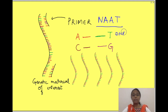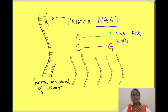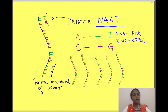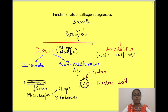For DNA viruses we may use polymerase chain reaction (PCR), which amplifies the amount of DNA. For RNA viruses we use reverse transcriptase polymerase chain reaction (RT-PCR), which converts the RNA into its complementary DNA and then detects the presence of this complementary DNA.